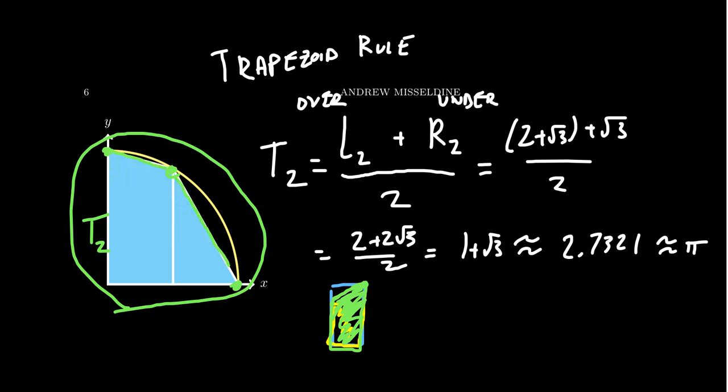The trapezoid approximates the curve, but there's still a little gap. So we don't have a perfect estimate. We can get a better estimate with the trapezoid rule, but it's still not perfect.